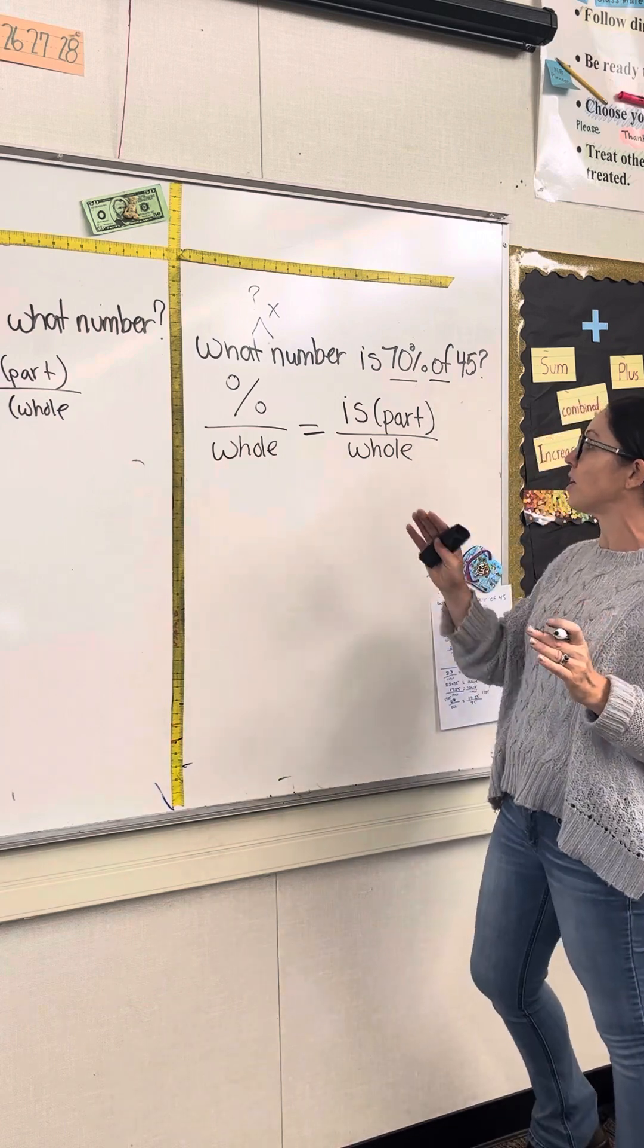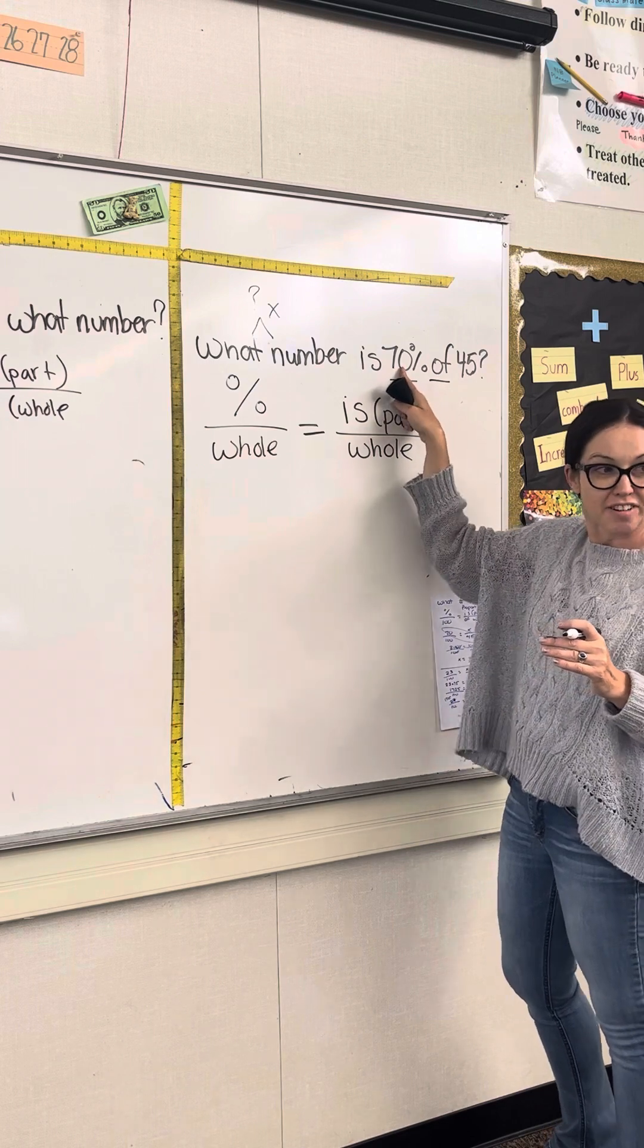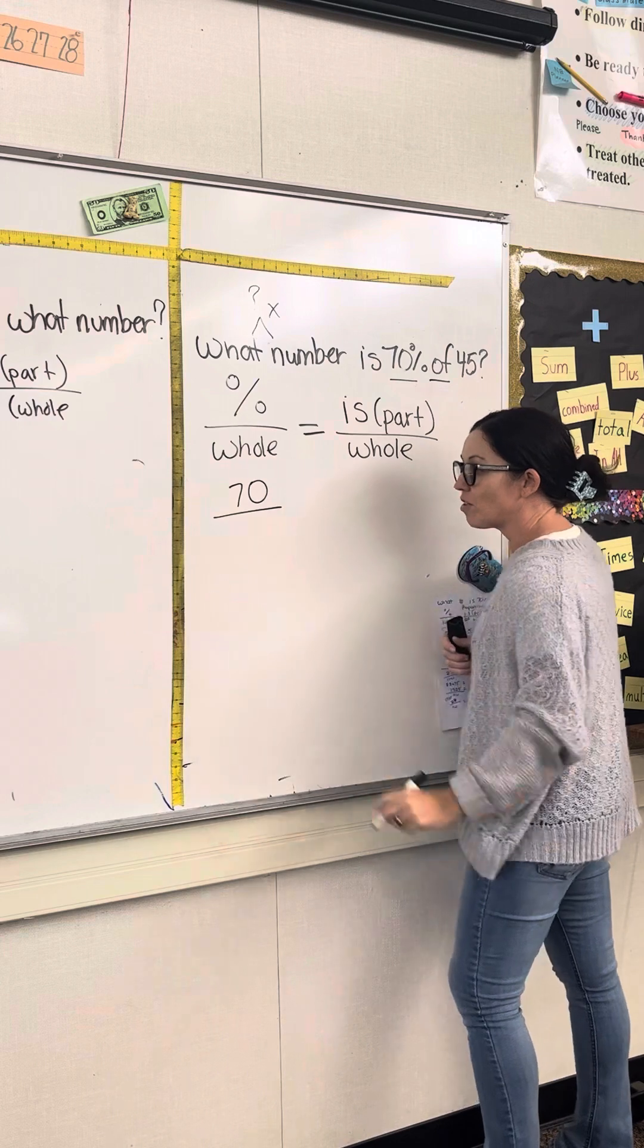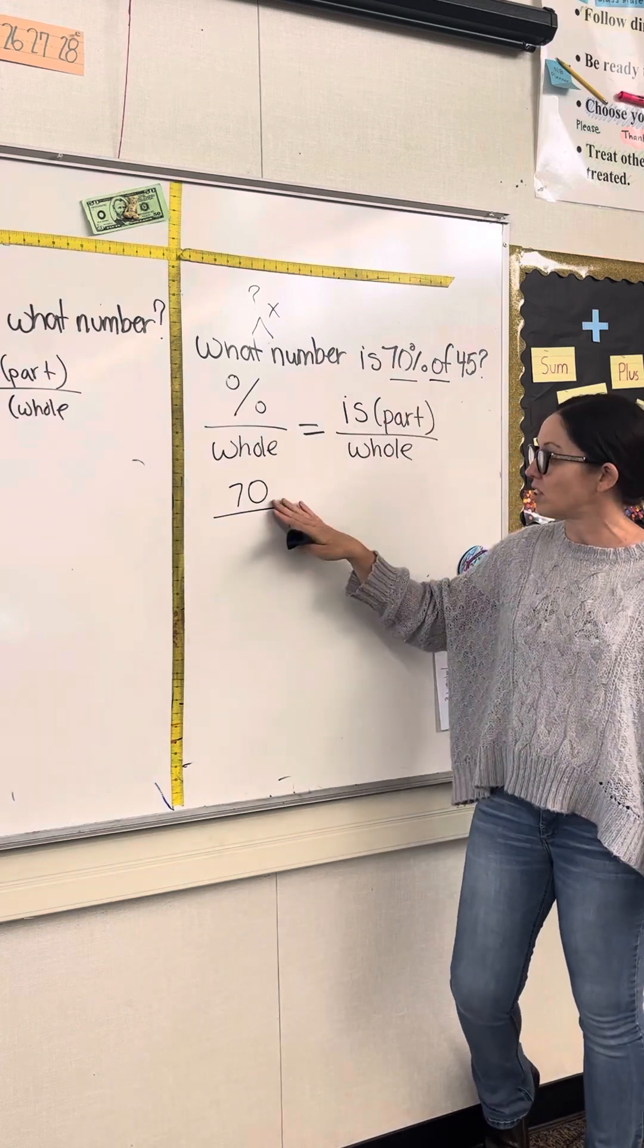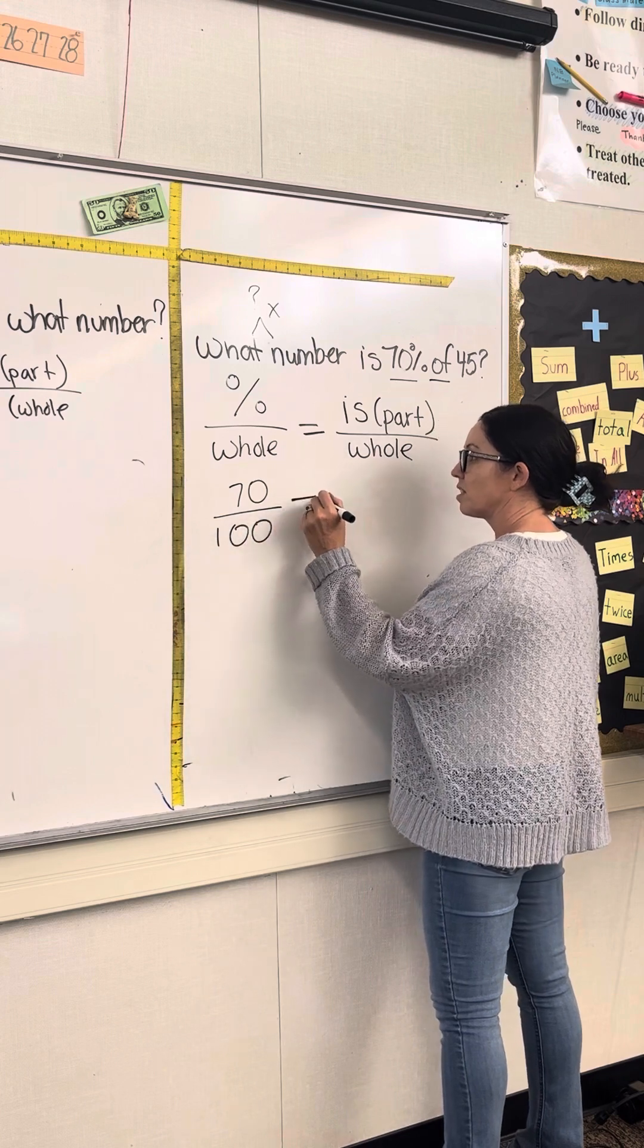So let's think about our relationships here. Is is the part, so is 70%. The part, 70%. And we already know that percent means per hundred. So 70% is gonna be out of 100.